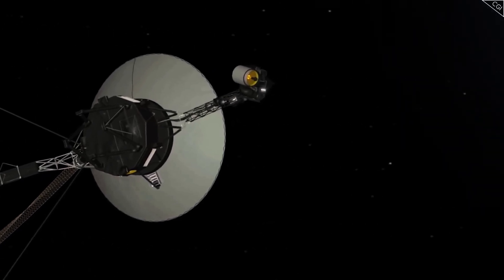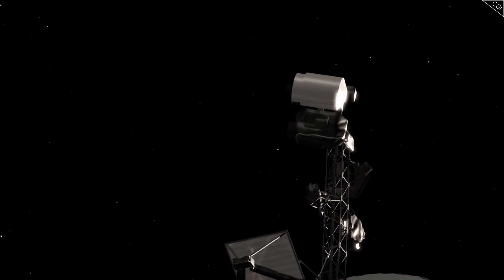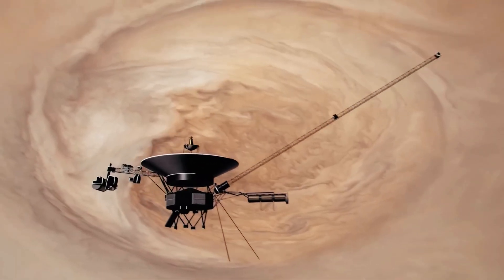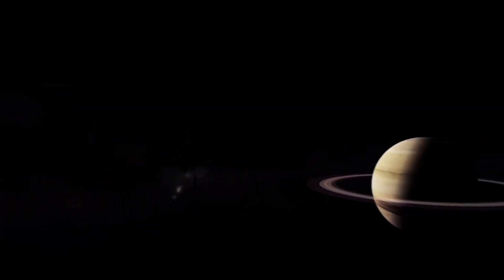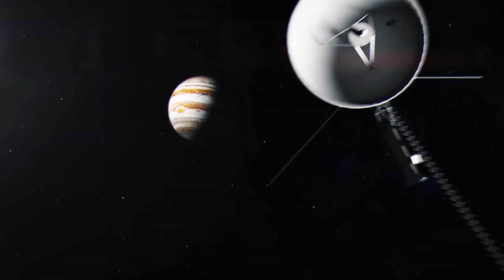While Voyager 2 explored Uranus and Neptune, Voyager 1 had already begun a different journey. With much of its scientific instruments powered down after Saturn, it was left with only tools to study its surroundings. However, it still had one more historic moment ahead.